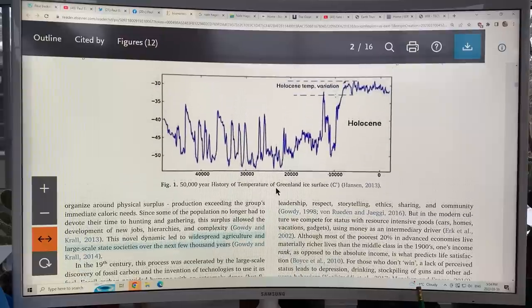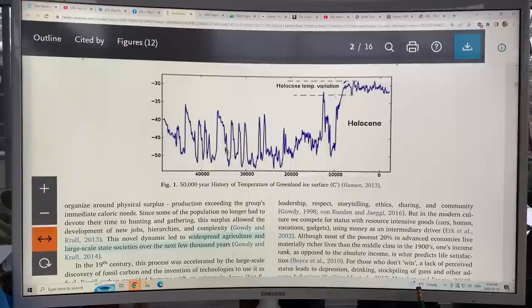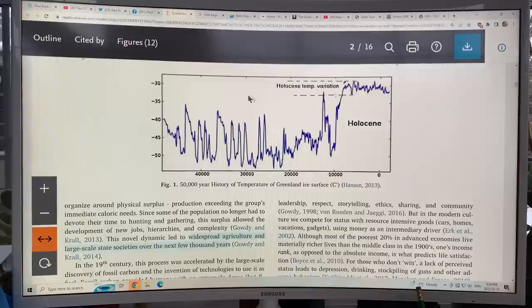This novel dynamic led to widespread agriculture and large-scale state societies over the next few thousand years. So this is a temperature of the Greenland ice surface, fluctuating from about minus 55 to minus 35 or so. And then in the Holocene, here we go, now it's hovering about minus 30. Very, very warm period.